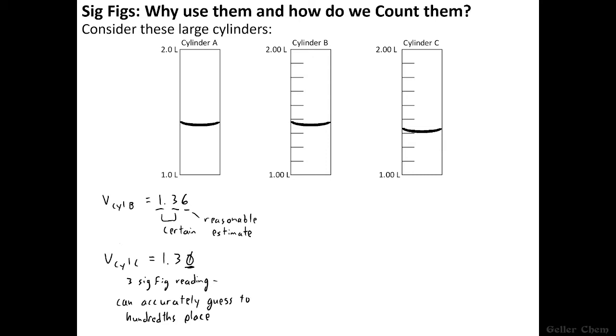But hopefully, rather than just memorize this rule with no clue of what it means, you can understand now why these zeros are considered significant and what that means. It's to emphasize the accuracy of this measurement here. Now, there are some other rules for when and when not to count zeros. So let's get into the logic of those.